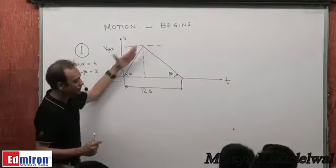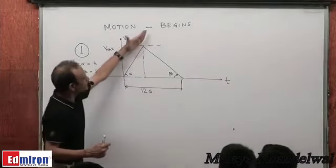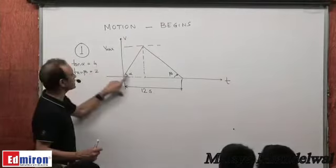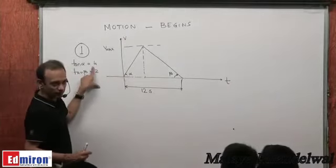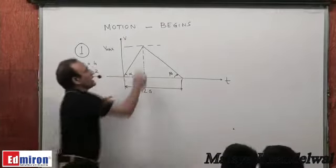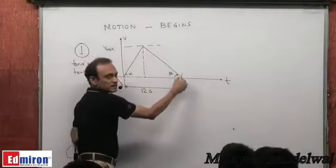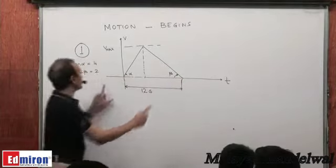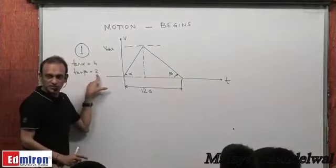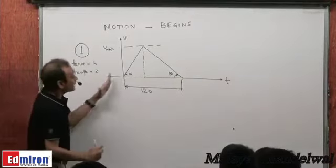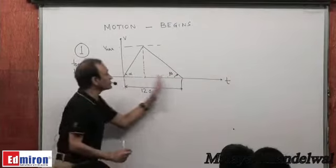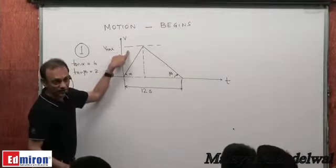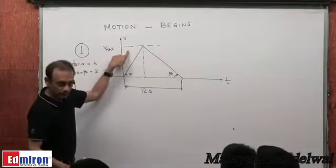We draw the velocity-time graph: linearly increasing with acceleration of 4 m/s² so tan α = 4, and then linearly decreasing with retardation where tan β = 2. The total time of the journey is 12 seconds, and I need to find Vmax.